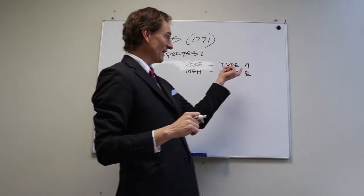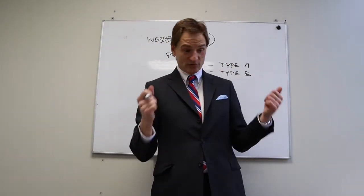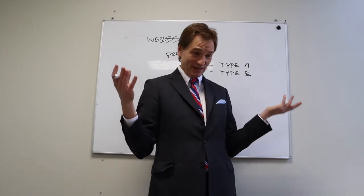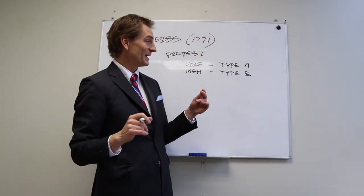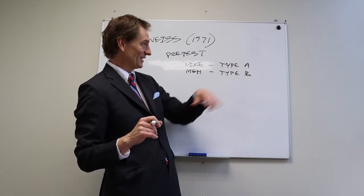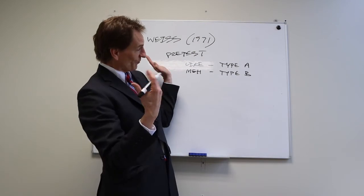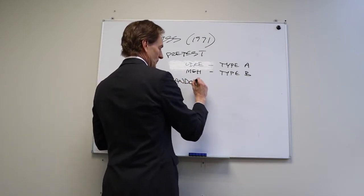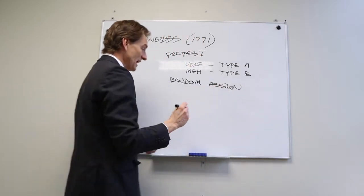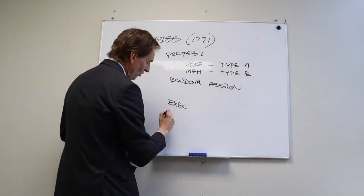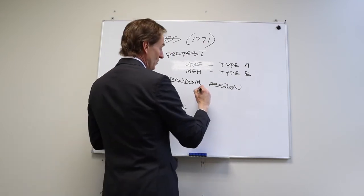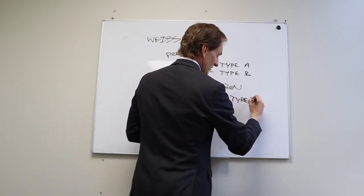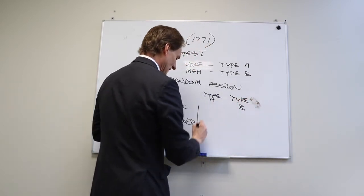Type A individuals are hard-charging and driven; Type B people are more relaxed — they still accomplish things but aren't as driven. Weiss gave the pretest and then randomly assigned the monkeys to either the executive or the worker condition, regardless of whether they were Type A or Type B.